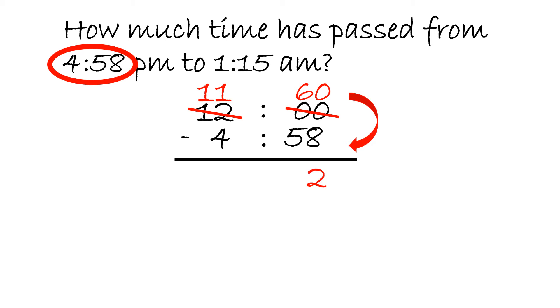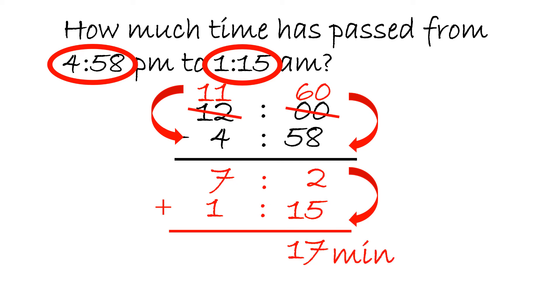Now we could add the second number, 1:15. So write 1:15 and let's do standard addition. 2 plus 15 will equal 17. 7 plus 1 will equal 8. 8 hours 17 minutes is the answer.